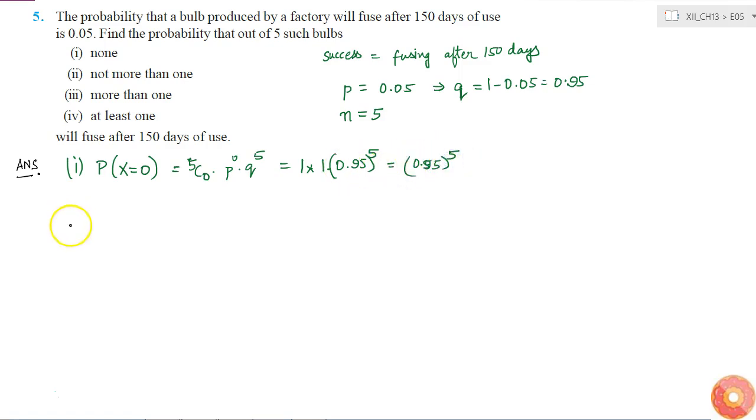Okay, now what is the second part? Not more than one bulb should fuse. That means probability of x less than or equal to 1. This is equal to probability of x equal to 0 plus probability of x equal to 1.